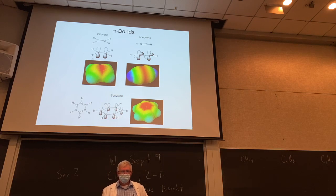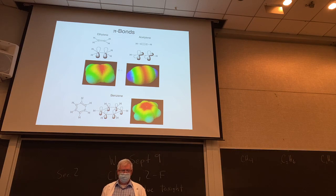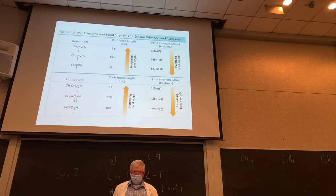We can also look at these with computer simulations for the electron density maps, which come from those calculations. Red means high electron density; blue is low electron density. For ethylene you see the pi bond as a nice dark red top and bottom. Then benzene, with all conjugated pi bonds, forms kind of a donut-type structure. Bond lengths, angles, and electronegativity are our last topics.